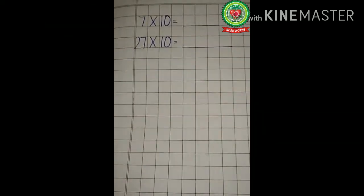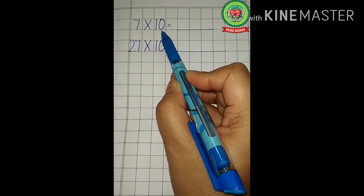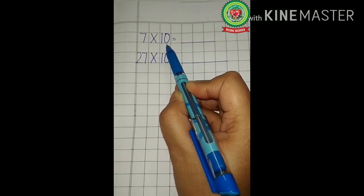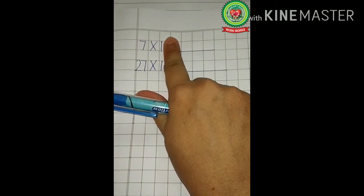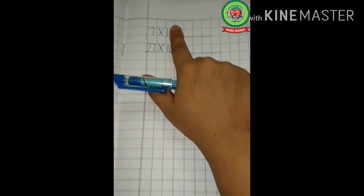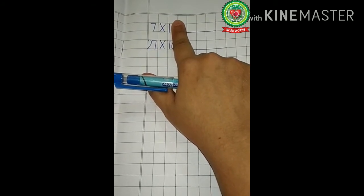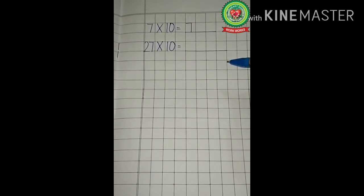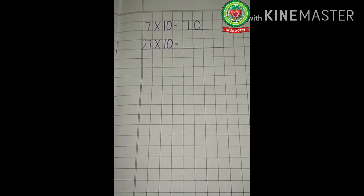Now let us take an example. Suppose a number is given to you: 7 multiplied by 10. The very first step is to hide the given zero with your finger. Now what can you see? 7 multiplied by 1. What is 7 ones? 7 ones is 7. So write 7 over here. Now you have removed your finger — what can you see? One zero is there.